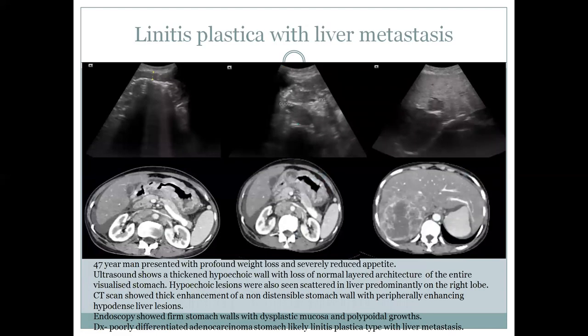A 47-year-old man presented with progressive weight loss and poor appetite. Ultrasound showed a thickened gastric wall with loss of normal architecture and liver lesions. CT scan showed thick enhancement of a non-distensible stomach. Endoscopy showed thickened stomach walls with dysplastic mucosa and polypoid growth with dysplasia. The diagnosis was poorly differentiated gastric carcinoma of the linitis plastica type.